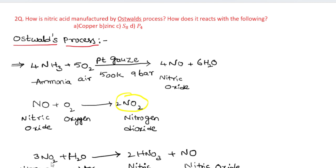In the third step, nitrogen dioxide is dissolved in water to form nitric acid. The formula for nitric acid is HNO₃. This is the main product of Ostwald's process.